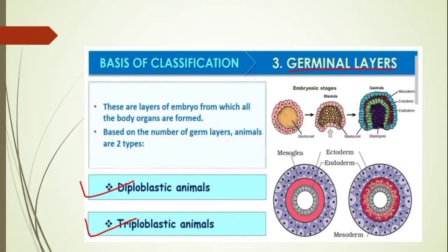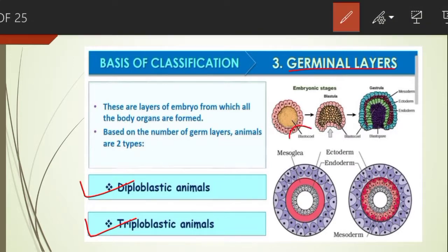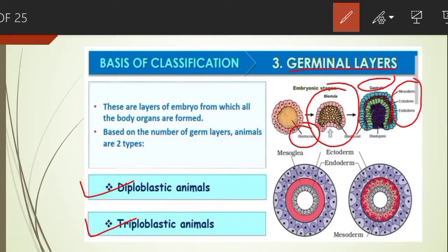During embryonic development, the blastocoel divides to produce the blastula; cells further divide to form three different layers in the gastrula — mesoderm, ectoderm, and endoderm. Depending on the presence or absence of these layers, organisms are divided into diploblastic and triploblastic animals.